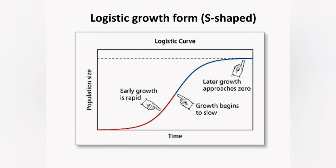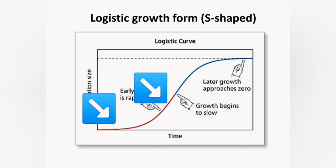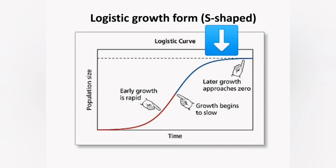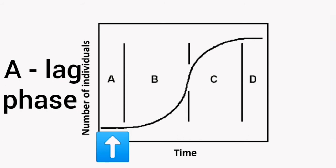The S-shaped curve is also known as the logistic growth curve. Again, time is on the X-axis and population size on the Y-axis. Early growth is initially slow, then speeds up, but slows down when it reaches the carrying capacity. The phases of this growth can be labelled A, B, C, and D. Phase A is called the lag phase, during which there is very slow initial growth in the population.